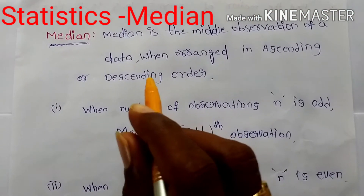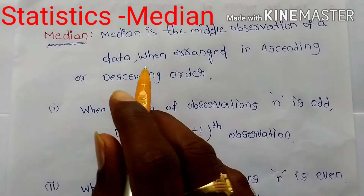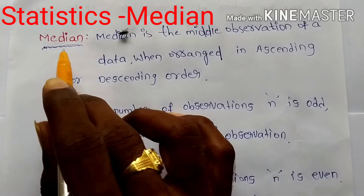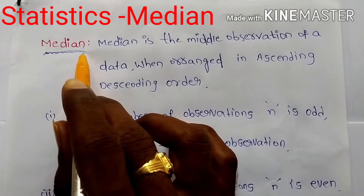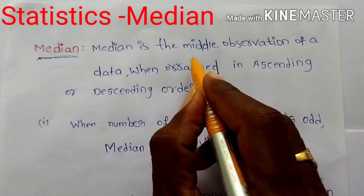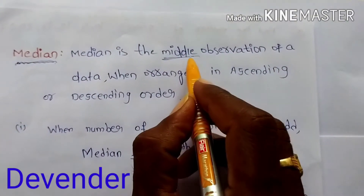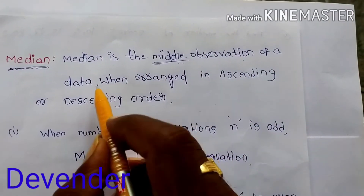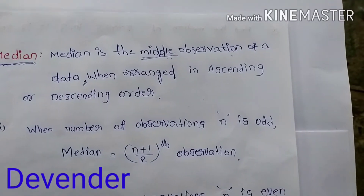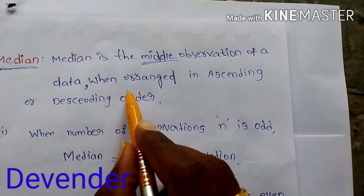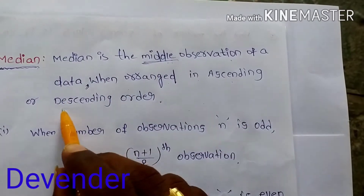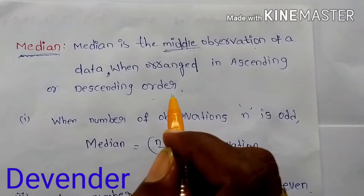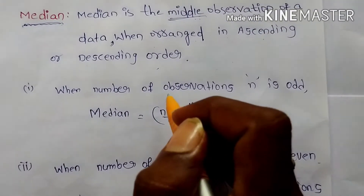Welcome to ninth class. In the previous class we learned mean. Now I am discussing the median. Median is the middle observation of a data when arranged in ascending or descending order.